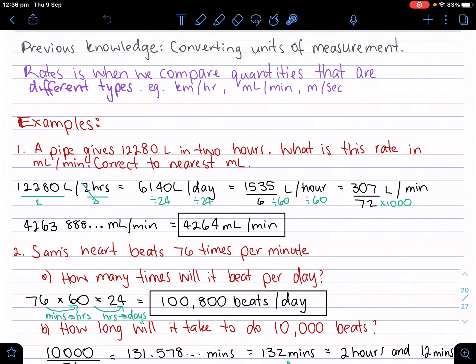Rates are a little bit different to ratios, where rates is when we compare quantities that are of different types. Some of the most common rates that you come across are kilometers per hour, milliliters per minute, or meters per second.